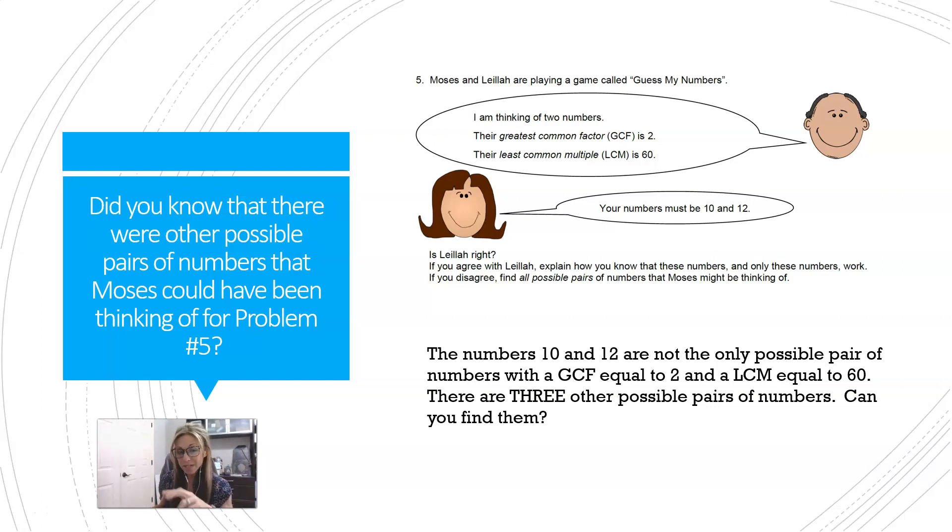Well, granted, that is a possible pair of numbers that Moses could be thinking of, but are those the only two numbers he could have been thinking of? Did you know there were other possible pairs? There was actually three other pairs of numbers that could have worked for Moses.